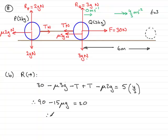So, rearranging this, adding 15 mu g to both sides and also subtracting 20 from both sides would give me 90 minus 20, which is 70. And adding the 15 mu g to the other side gives 15 mu g.